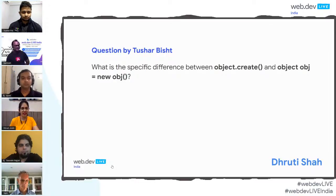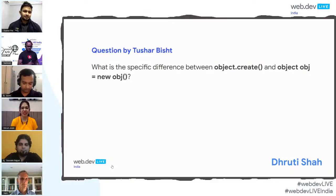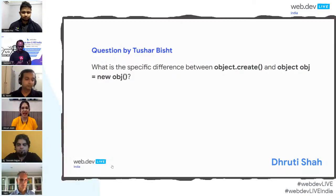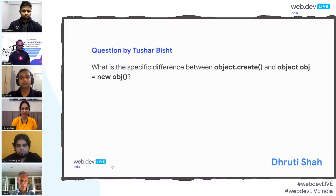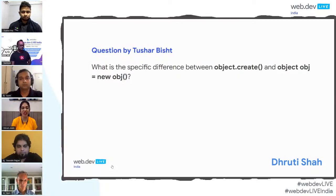Dhruthi, you want to go ahead and answer that question? So basically, object.create method and the new operator seem to do the same things as both create a new object and inherit a prototype. But there is one main difference: when we create a new object using the object.create method, it will not execute the constructor code and it returns undefined. Whereas if we create the object using the new keyword, it will actually run the constructor code and give the proper output. Hopefully this has given you a little more insight on how object.create and the new operator are differentiated from each other.